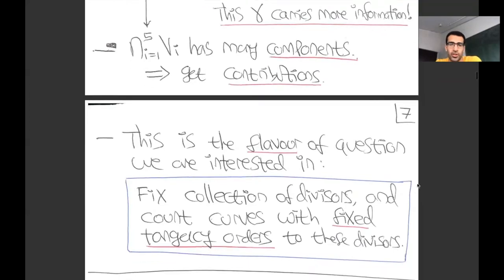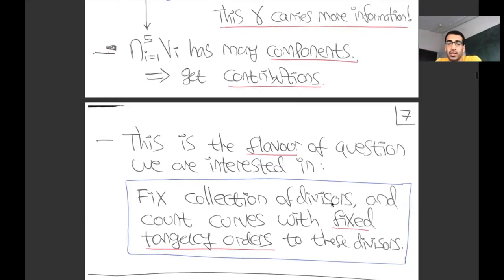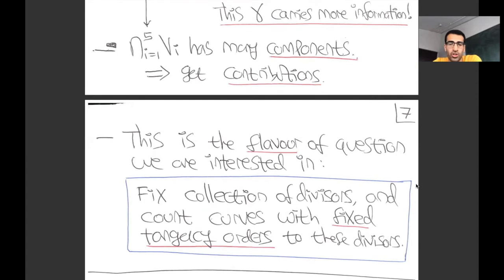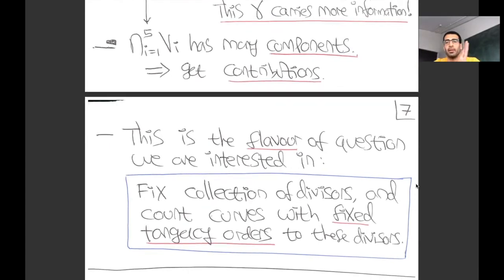This is the flavor of the questions we're interested in: you fix some collection of divisors—in this case the five conics C1 through C5—and then you want to count curves which have fixed orders of tangency to these divisors. These are the kinds of questions that enumerative geometers are interested in.